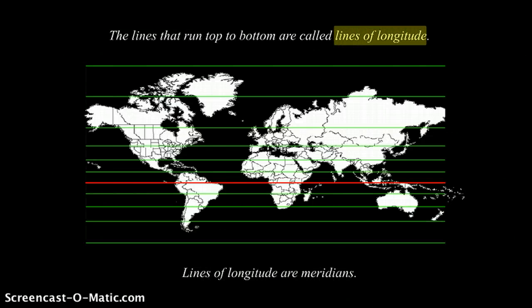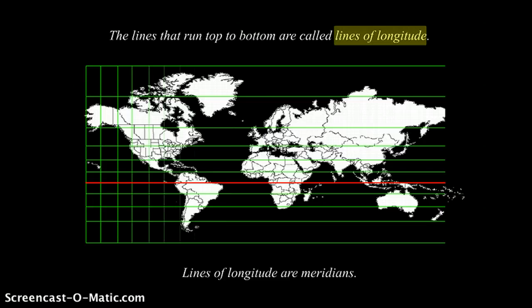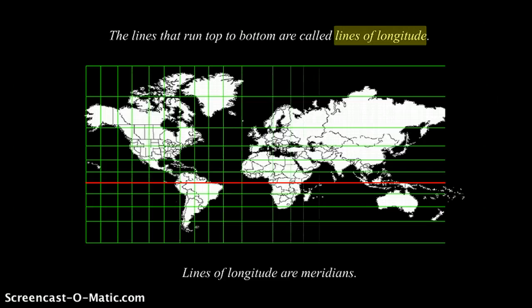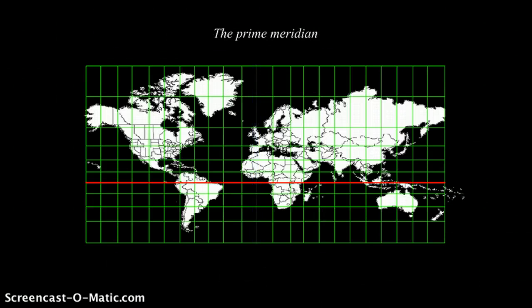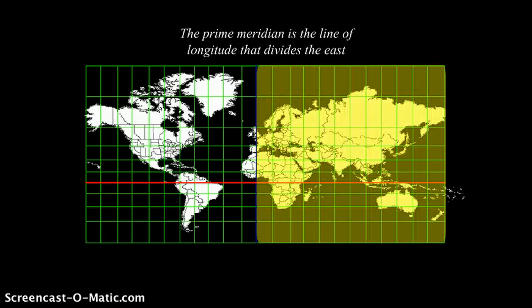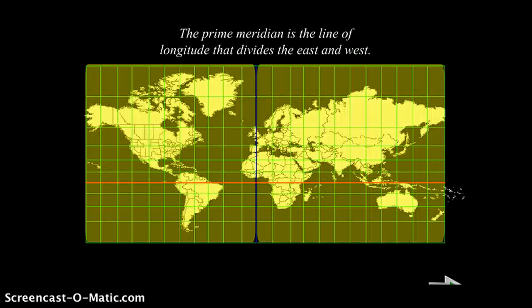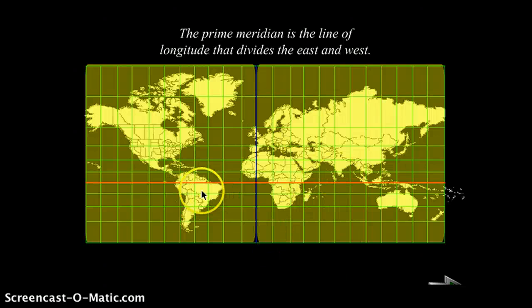The lines that run from top to bottom are called lines of longitude. Lines of longitude are meridians. The prime meridian is a line of longitude. The prime meridian is the line of longitude that divides the east and the west. This is the prime meridian.